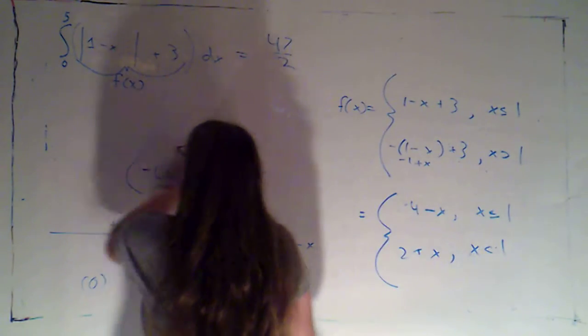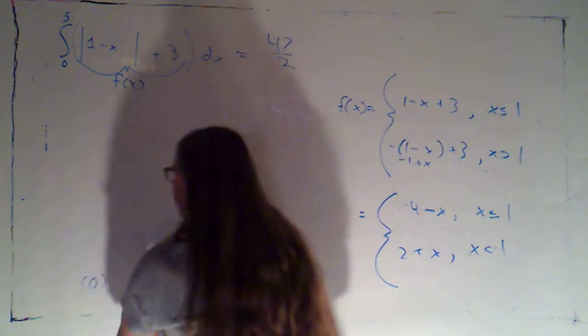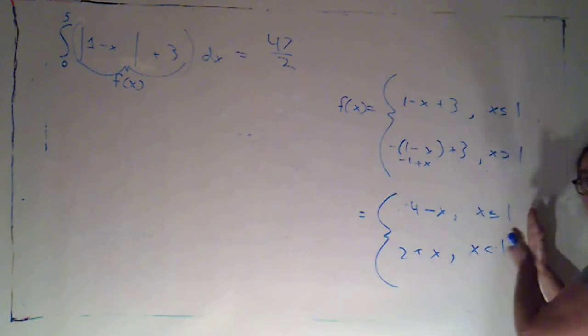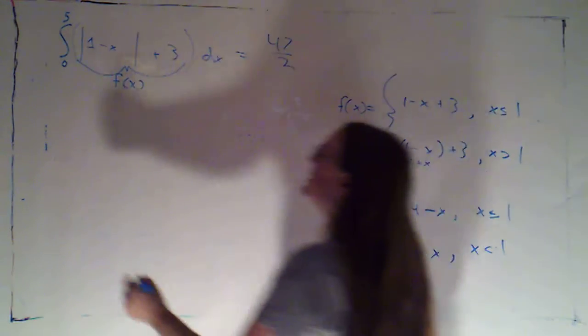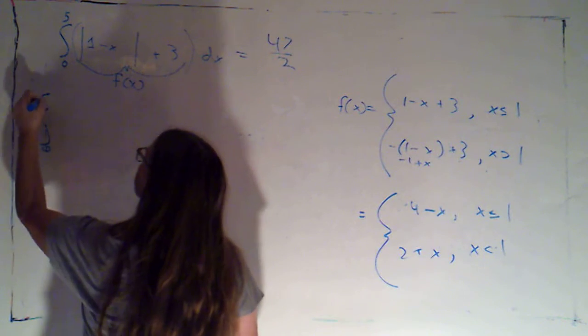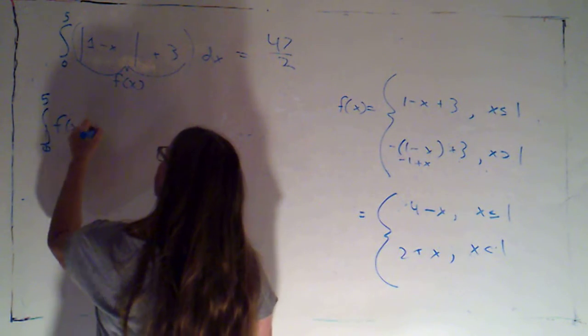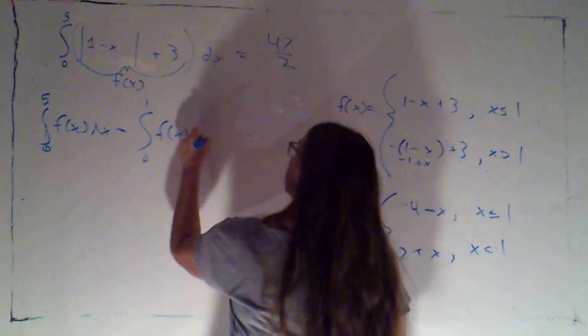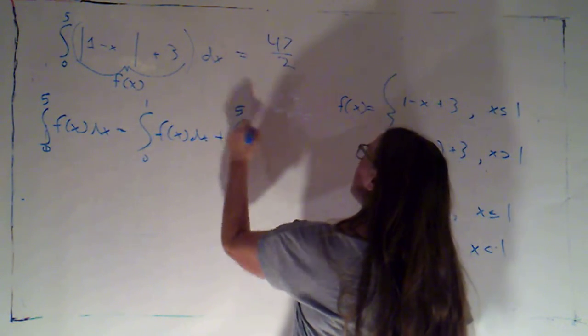Okay, so now if I'm integrating from 0 to 5 that's going to cross over the point 1 where the rule changes. So I'm just going to say that the integral from 0 to 5 of f of x dx is the integral from 0 to 1 plus the integral from 1 to 5.